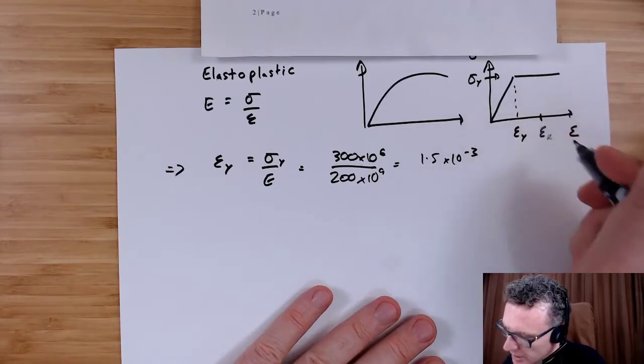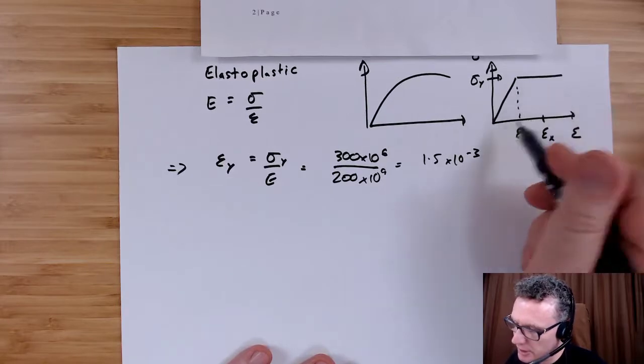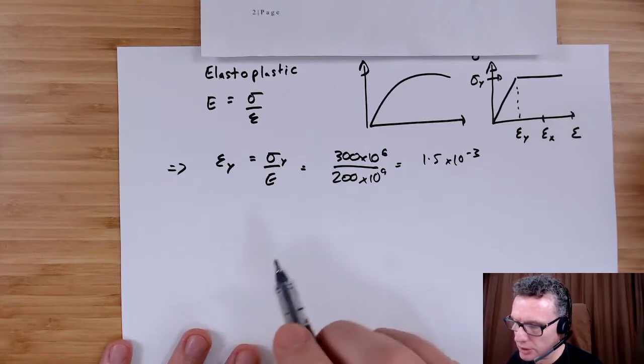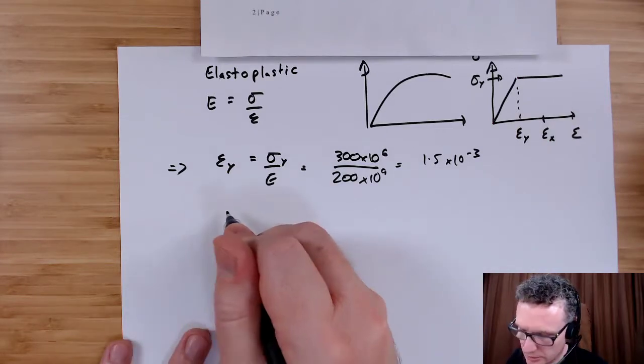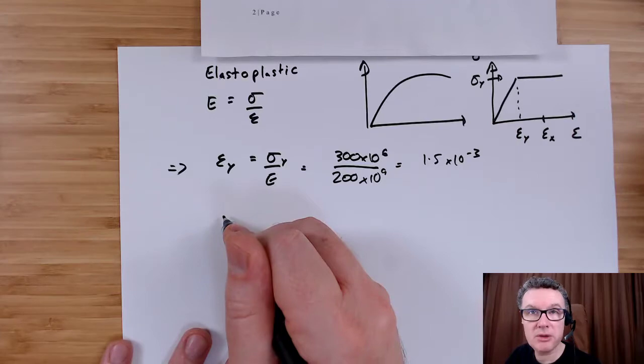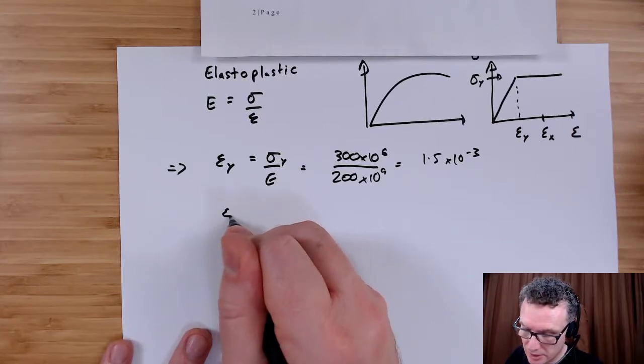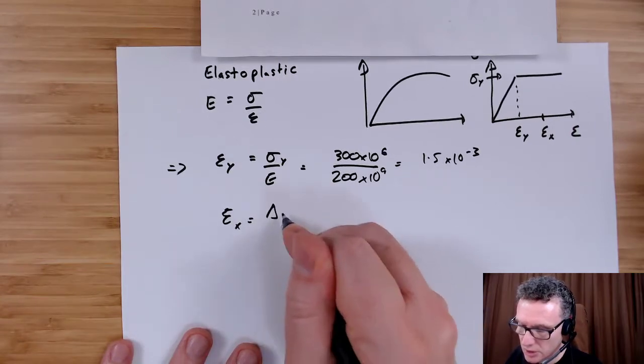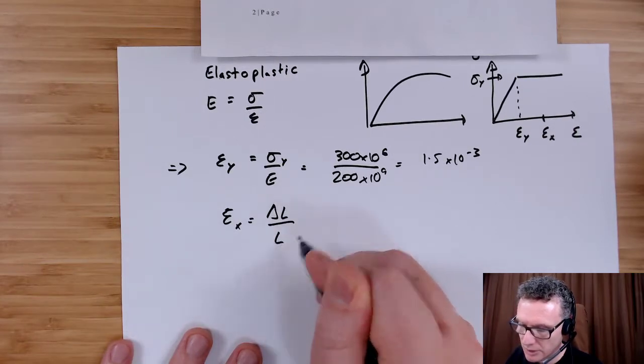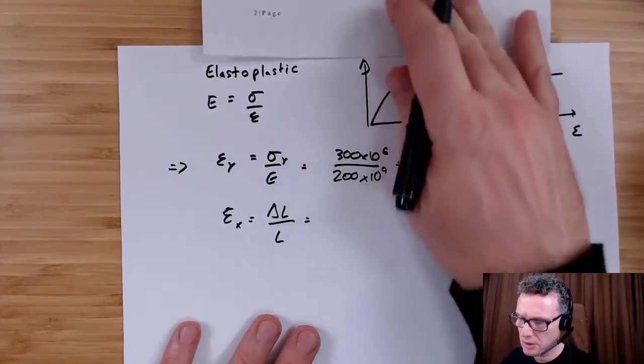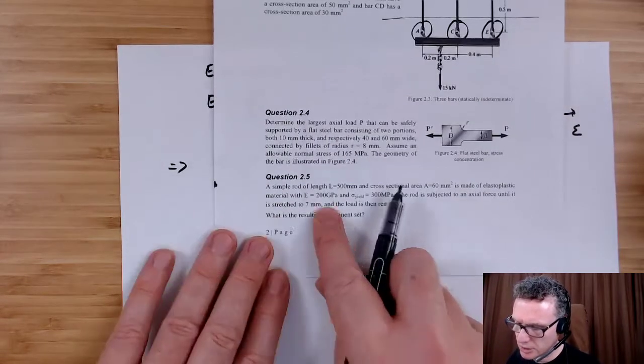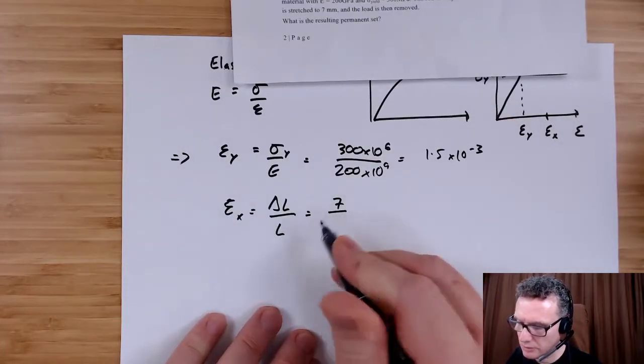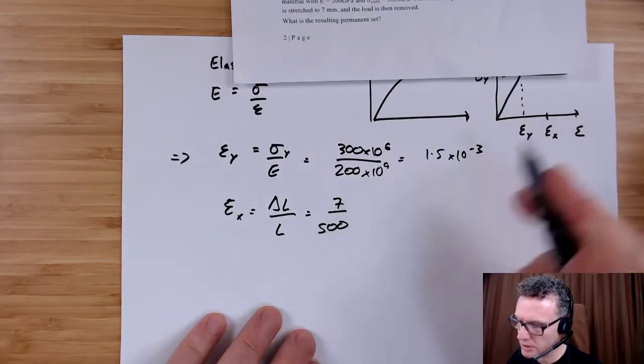I've stretched it out here. What's the equivalent strain to my stretch? Well, to work that out, I will then do: strain is the change in length divided by length, the extension. My extension is seven millimeters, my original length is 500, so seven over 500.